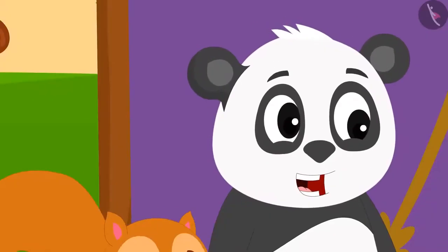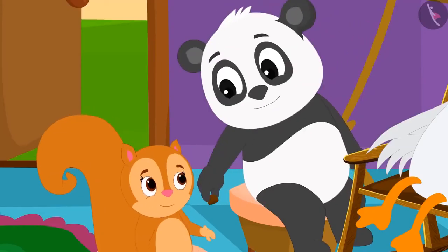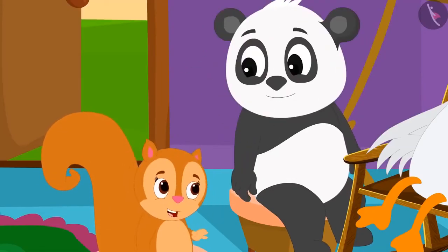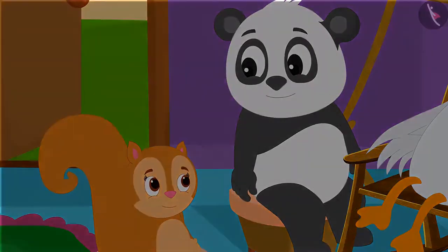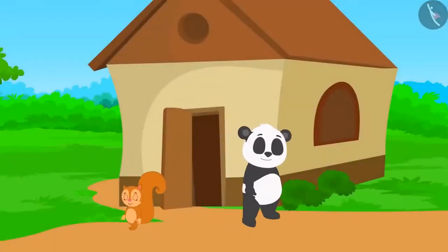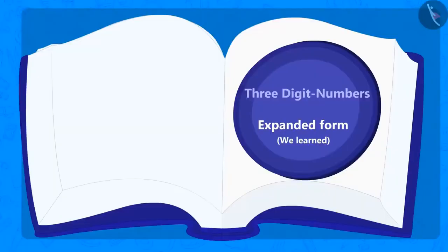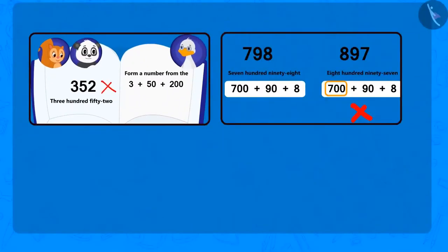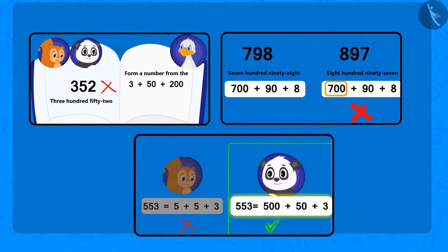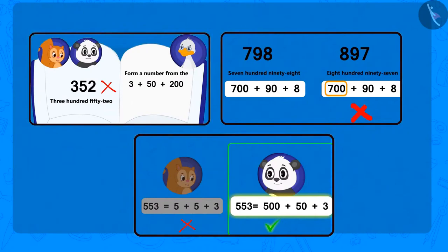Golu gave half of the toffee to Chanda and they ate the toffee together, then went to their homes. In this lesson we looked at some common mistakes related to writing the expanded form of three-digit numbers. Hope you will not repeat those mistakes.